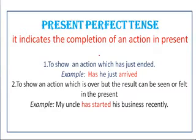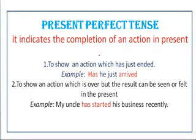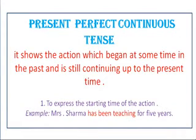Then we come to the next type: present perfect tense. Hamesha yaad rakhe, jab hum present perfect tense ki baat karte hain, toh isme 'has' ya 'have' ka upyog hota hai — yeh ek clue hai. It indicates the completion of the action at present. Jo cheez abhi khatam hoti hai, like 'I have done my studies,' 'Has he arrived?' or 'My uncle has started his own business recently.' This is an action which is taking place in the present.